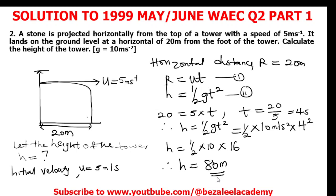That's how to solve this question. The question asks you to calculate the height of the tower, and the height h is 80 meters. If you have not subscribed to this YouTube channel, kindly click the subscribe button now and turn on the notification bell so that whenever we upload new videos you will be notified. You are free to like and share with your friends. God bless you.